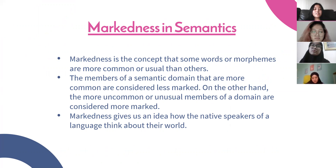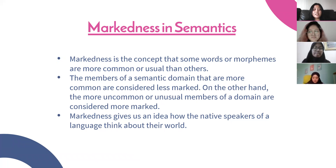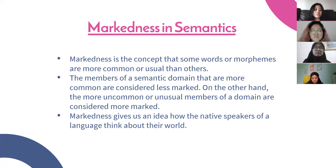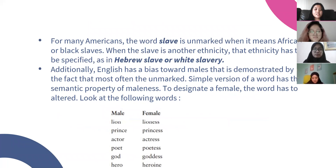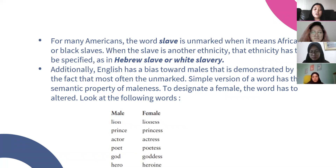The next material is markedness in semantics. Markedness is the concept that some words or morphemes are more common or usual than others. The members of a semantic domain that are more common are considered less marked. The more uncommon or unusual members of a domain are considered more marked. Markedness gives us an idea of how native speakers of a language think about their world. For many Americans, the word slave is unmarked when it means African or Black slaves. When the slave is another ethnicity, that ethnicity has to be specified, as in 'Hebrew slave' or 'white slavery.' English also has a bias toward males — the unmarked version of a word often has the semantic property of maleness, and to designate a female, the word has to be altered.